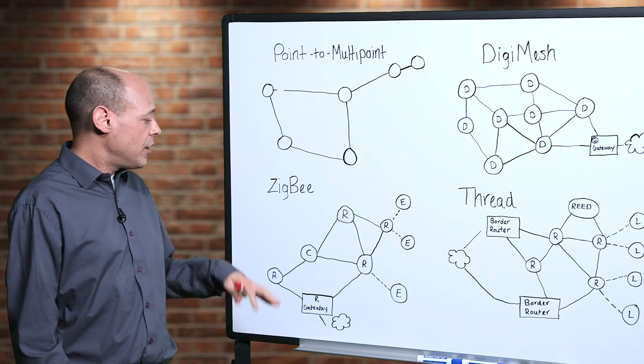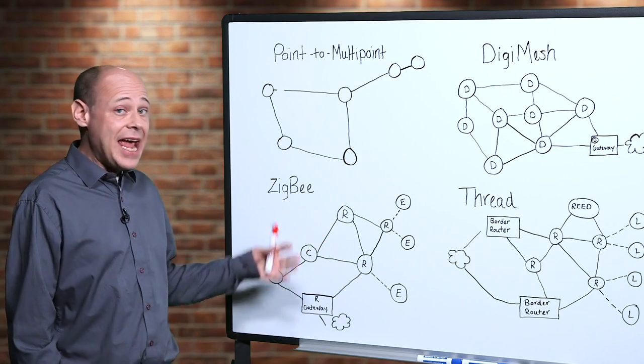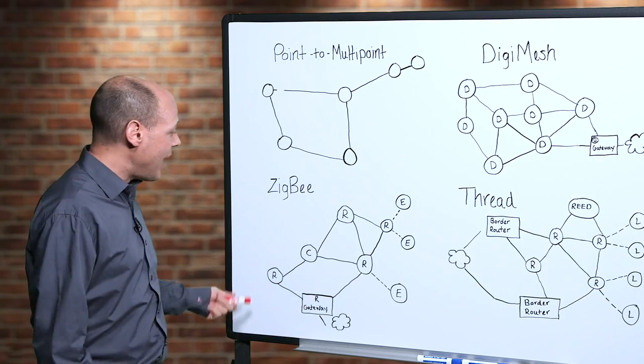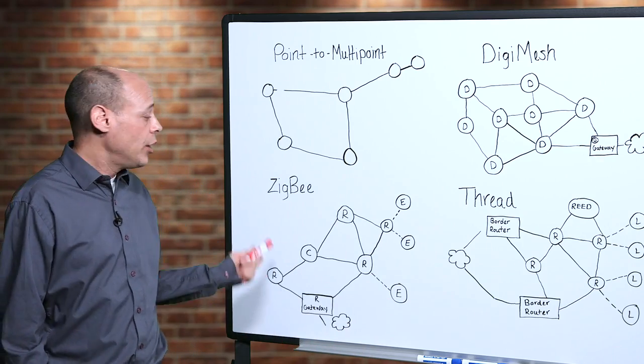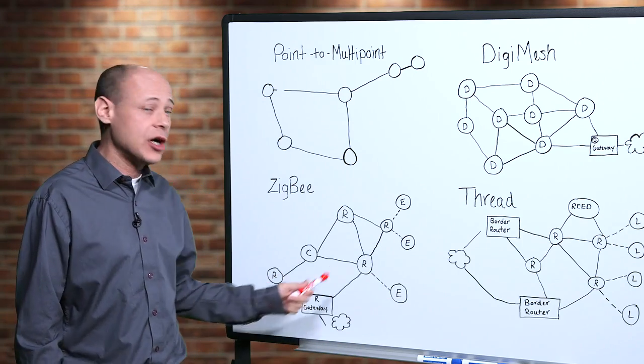In a mesh network, there's no single point of failure and every radio can communicate with every other radio on the network no matter how far away they are as long as there's a valid route.